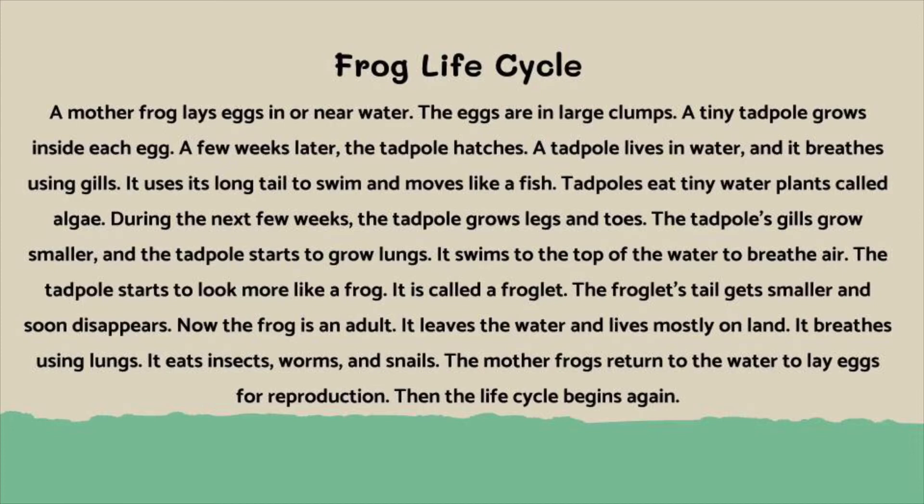Now the frog is an adult. It leaves the water and lives mostly on land. It breathes using lungs. It eats insects, worms, and snails. The mother frog returns to the water to lay eggs for reproduction. Then the life cycle begins again.